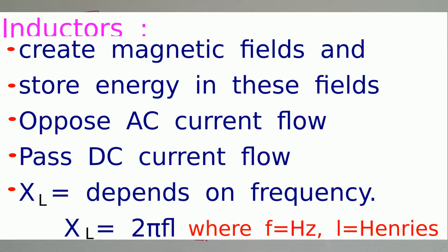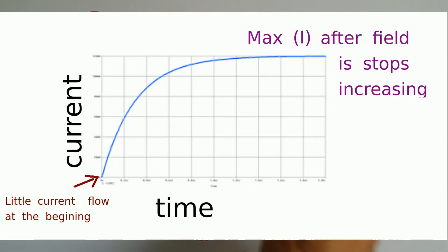To summarize, we can say that inductors create magnetic fields, they store energy in those fields that they create, they oppose a changing AC current. But in DC current, at the beginning they oppose it, but once the DC current does not change, the electrons get to a maximum current flow. That's the chart that I showed you—there was time against current.